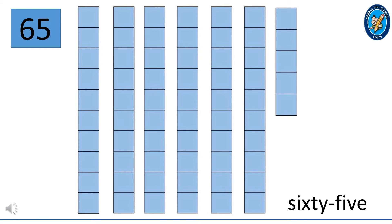This is 65. 6 and 5 together make 65. 65 is made up of 6 ten-squared blocks and 5 squares. So that means 60 plus 5 is 65. Can you see the number name at the bottom right of your screen?